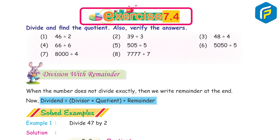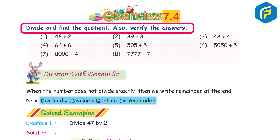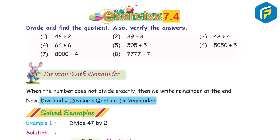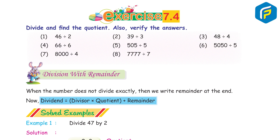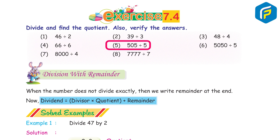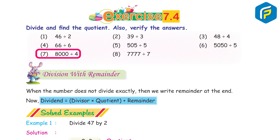Exercise 7.4, Question 1: Divide and find the quotient. Also verify the answer. 1) 46 ÷ 2 = 23. 2) 39 ÷ 3 = 13. 3) 48 ÷ 4 = 12. 4) 66 ÷ 6 = 11. 5) 505 ÷ 5 = 101. 6) 5050 ÷ 5 = 1010. 7) 8000 ÷ 4 = 2000. 8) 7777 ÷ 7 = 1111.